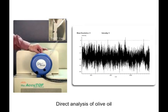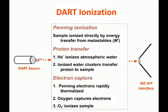So we can probably go ahead and stop the video right there. And then we'll resume by talking about how DART ionization works. DART ionization is based on Penning ionization, a term originally developed by F.W. Penning in 1927, where they discovered that excited-state neutrals can produce an ion and electron if they come in contact with a sample that has a lower ionization energy than the energy of the neutral. So the first step in DART ionization is the Penning ionization, where the sample is ionized directly by energy transfer from long-lived excited-state neutrals, or as we call them, metastables.